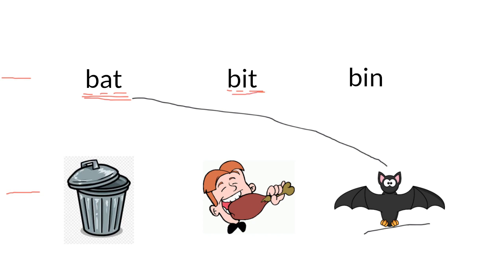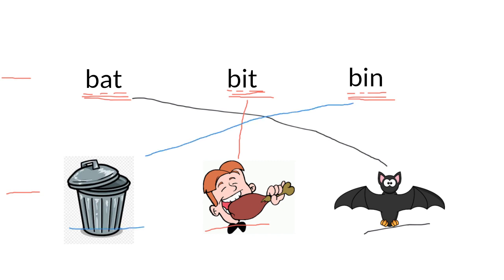Bit. Which picture shows bit? Yes, this one. So we draw a line. From the word bin - bin. Where's the picture of the bin? Yes, this one. So we draw a line from the word bin to the picture of the bin. Well done everybody.